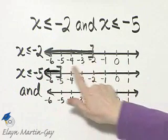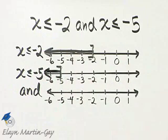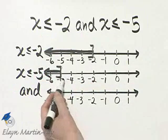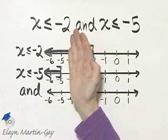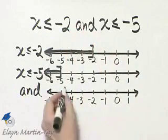Well, from -2 to -5, only one graph is shaded, so that's not part of the intersection. But do you see from -5 on, both graphs are shaded? So that is the intersection.